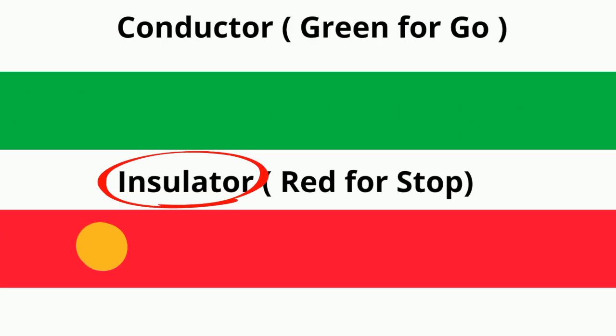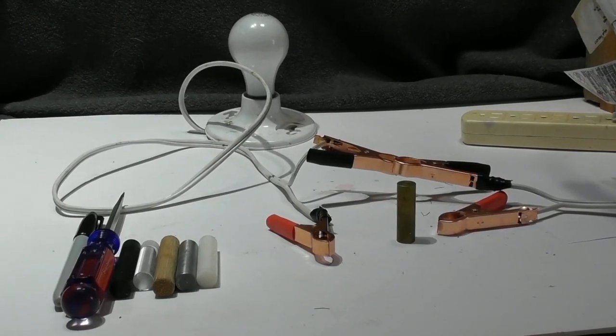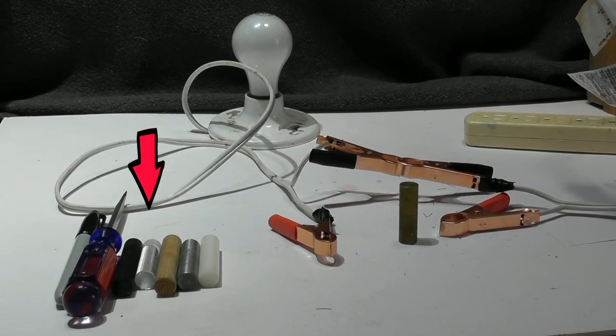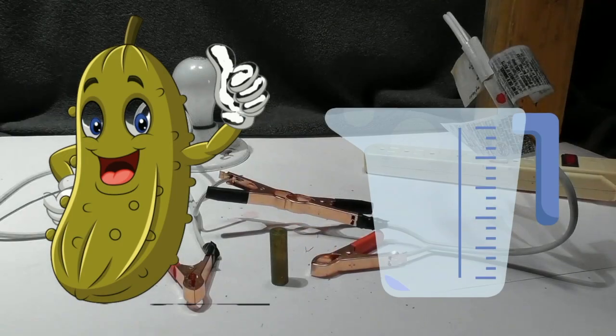What we will do in this video is take a look at some different objects. We have some metals, some plastics, a sharpie. How about a pickle and some water?